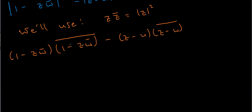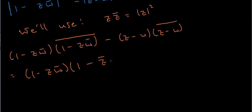Now I'm going to distribute the conjugate sign. The conjugate of (1 - zw̄) is (1 - z̄w), because the conjugate of 1 is 1, the conjugate of z is z̄, and the conjugate of w̄ is w — since the conjugate of a conjugate gives back the original number. Similarly, the conjugate of (z - w) is just (z̄ - w̄).